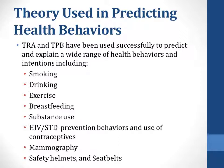The theory of reasoned action and theory of planned behavior has been used successfully to predict and explain a wide range of health behaviors and intentions, including smoking, drinking, exercise, breastfeeding, substance use, HIV/STD prevention behaviors and use of contraceptives, mammograms, safety helmets, and seat belts. These are just skimming the surface of some of the articles using this theory that is out there.